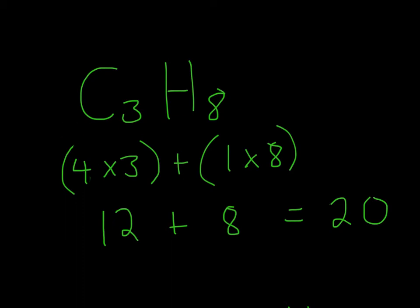For this problem we have C3H8. Since carbon's in group 4, we write down 4, and since the subscript is 3, we have 4 times 3. For hydrogen it's in group 1, and we have a subscript of 8, so it'll be 1 times 8. That gives us 20.